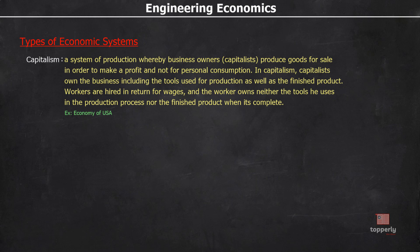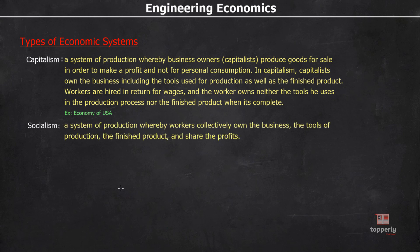The next type is socialism. Socialism is a system of production whereby workers collectively own the business, the tools of production and the finished product, and share the profits among themselves. Examples of socialism are cooperatives like Amul and Milma, where the firms are collectively owned by the workers and the profits are shared among themselves.